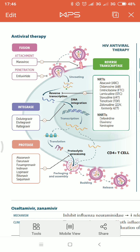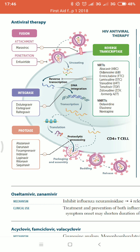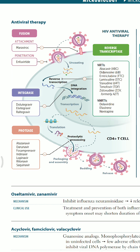Once the viral RNA is converted into double-stranded DNA, it gets integrated into human DNA with the help of an enzyme known as integrase. The next group of drugs is integrase inhibitors, which include dolutegravir, elvitegravir, and raltegravir.